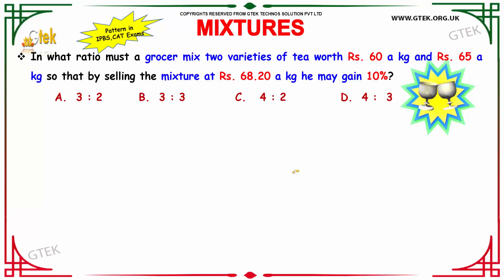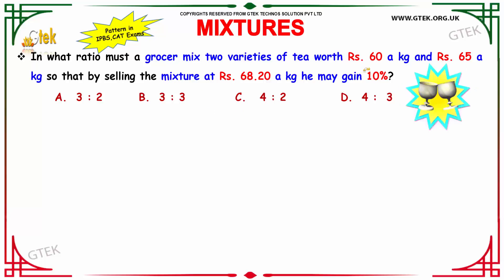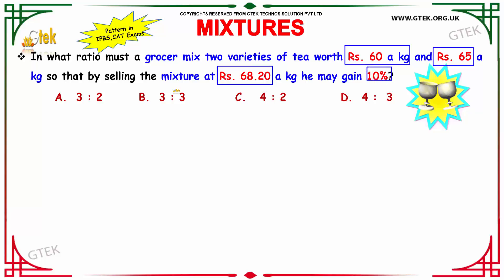Let us see our next interesting question. In what ratio must a grocer mix 2 varieties of tea worth Rs.60 per kg and Rs.65 per kg? By selling the mixture, he should get a 10% profit, and his selling price is Rs.68.20 paise.